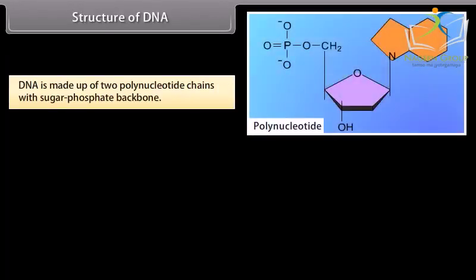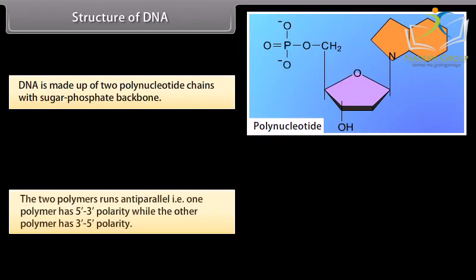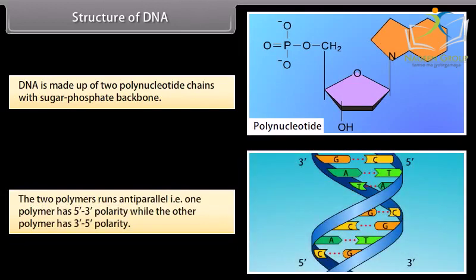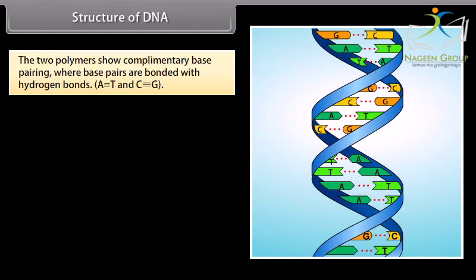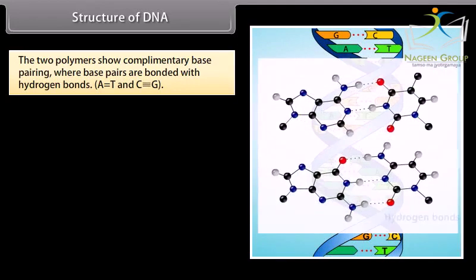DNA is made up of two polynucleotide chains with a sugar-phosphate backbone. The two polymers run anti-parallel — that is, one polymer has 5' to 3' polarity while the other polymer has 3' to 5' polarity. The two polymers show complementary base pairing where base pairs are bonded with hydrogen bonds.